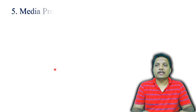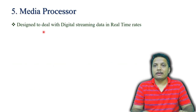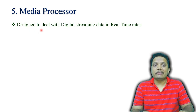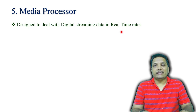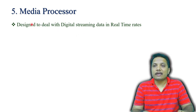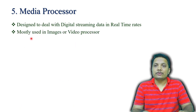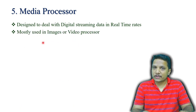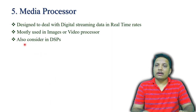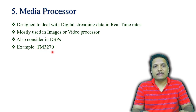The fifth General Purpose Processor is the media processor. It is designed to deal with digital streaming data in real-time rates, so for real-time applications we use the media processor. It is mostly used in image and video processing and is also considered a type of digital signal processor. An example is the TMS32070.